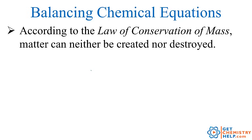So first off, what is balancing and why do we need to do it? Think back to the law of conservation of mass that said that matter could neither be created nor destroyed. So that means when you have a chemical equation, whatever atoms go in and react, those same atoms have to come out as products. You can recombine them in different configurations, and they can change partners, but whatever atoms react, those same atoms have to be products.